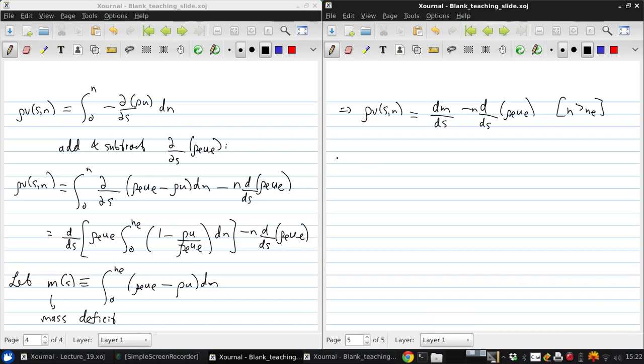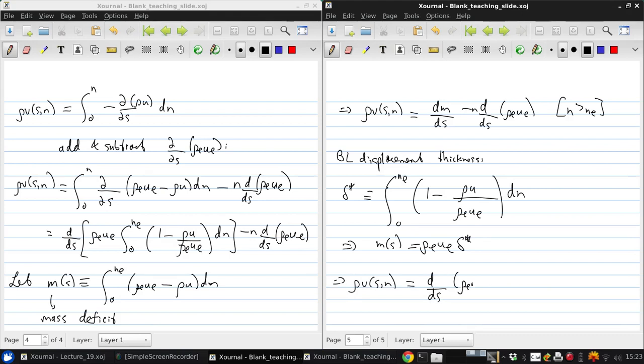Now you may recall a definition from third year fluids of the boundary layer displacement thickness, which is δ*. Which is just the integral from 0 to n_e of (1 minus ρu/ρ_e u_e) dn. So that m of s is just ρ_e u_e δ*.